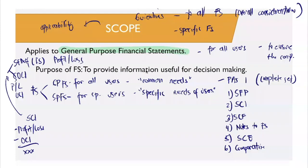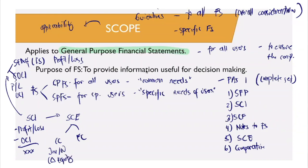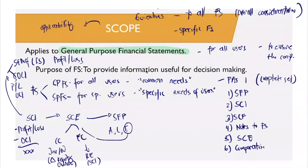If you remember the items of OCI, we have the mnemonic RITED — revaluation surplus, investments carried under fair value through other comprehensive income, translations or gains/losses of foreign financial statements, employee benefits as to actuarial gains or losses, and derivatives designated as a cash flow hedge. After preparation of the SCI, the items are presented in your statement of changes in equity, which covers your contributed capital and your earned capital. Contributed capital pertains to investments, withdrawals, or any changes in equity participation of the owners. Earned capital talks about retained earnings.